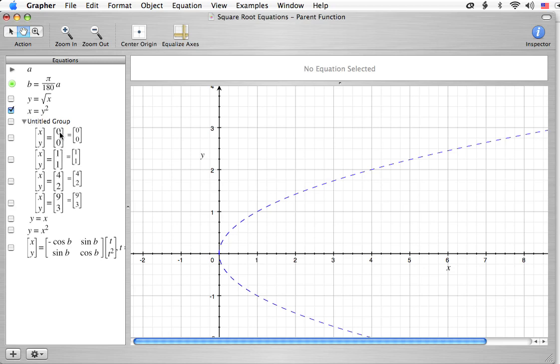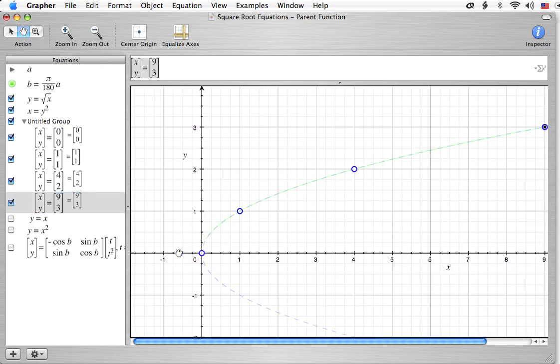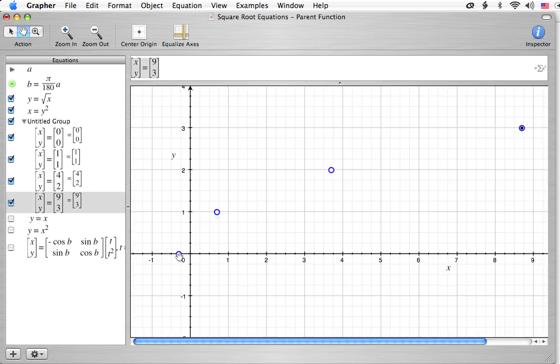We can choose the values y equals 0, y equals 1, y equals 2, and y equals 3. If we square 0, we're going to get 0. If we square 1, we're going to get 1. If we square 2, we're going to get 4. If we square 3, 3 times 3 will be 9. So let's put these on successively. There is 0, 0. There is 1, 1. There is 2, 4. And right there is our third point. Let's move it over just a little bit. There are our points.